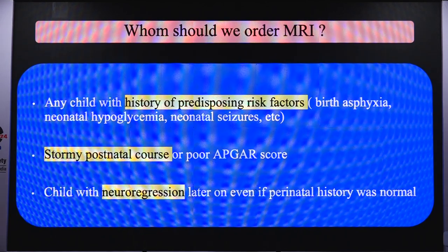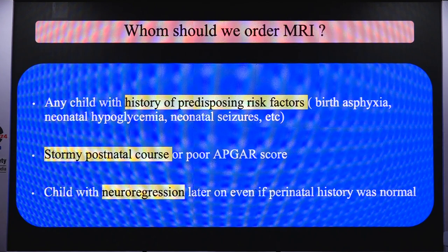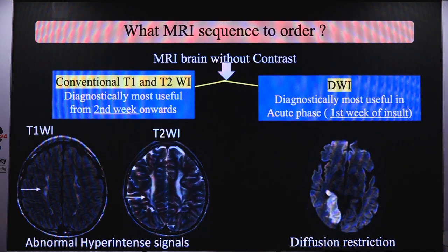For MRI sequence: an MRI brain without contrast is good enough. Conventional T1 and T2 weighted images are diagnostically most useful from the second week of insult onwards, showing abnormal hyperintense signal on both T1 and T2. Diffusion weighted images are diagnostically most useful in the very acute phase — within the first week of insult — and show diffusion restriction.